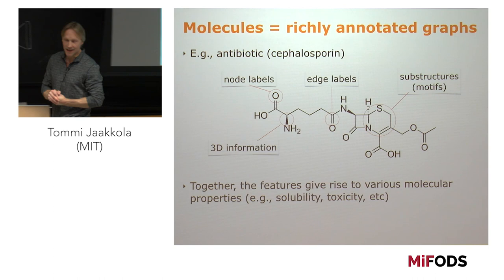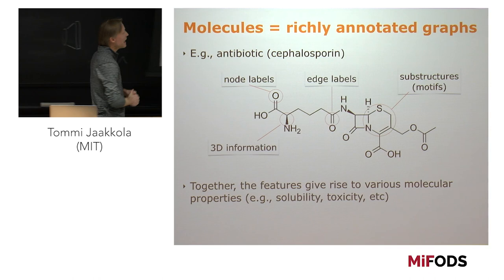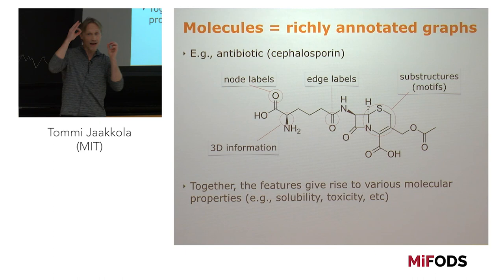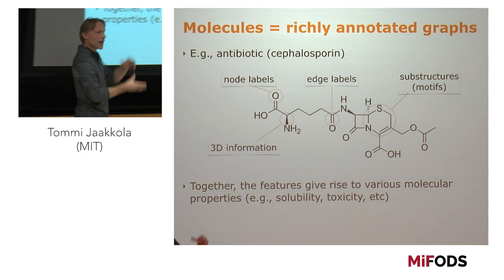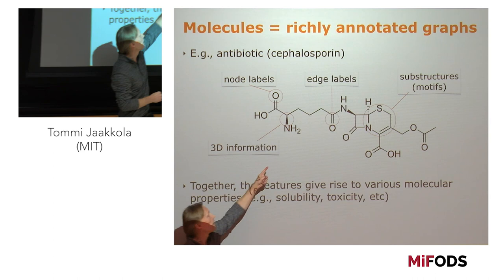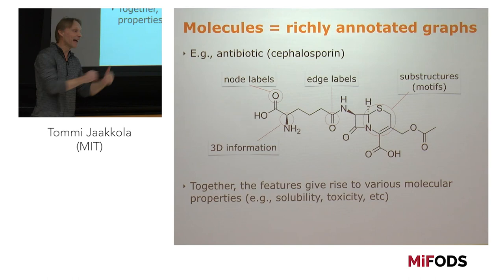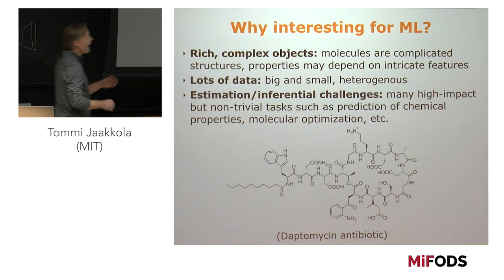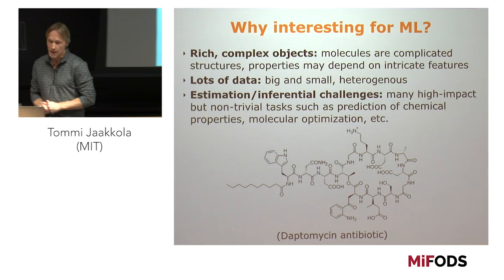What are molecules as graphs? We know about annotated graphs, but what's particular about molecules as graphs? Here's a particular antibiotic molecule. It has node labels — the atoms vary at each node. You have edge labels — atoms are bonded together with different types of bonds. You have substructures that are larger motifs important structurally, and you also have 3D information indicating whether bonds go into or out of the plane. Why are these structures interesting from a machine learning perspective?